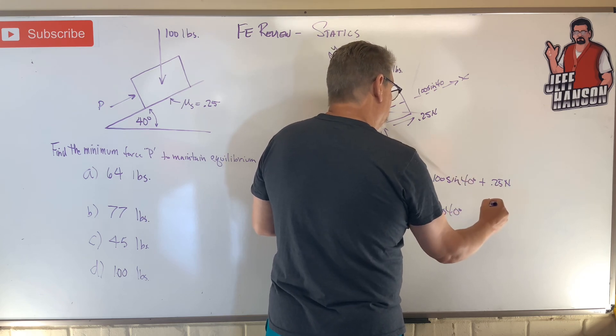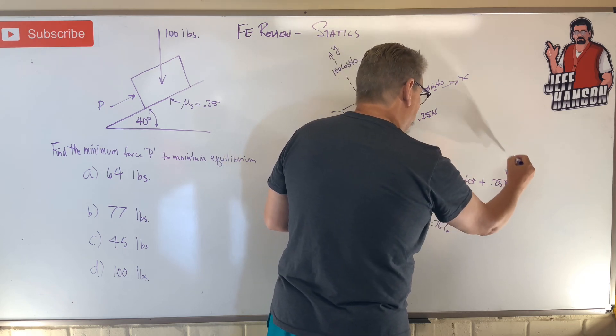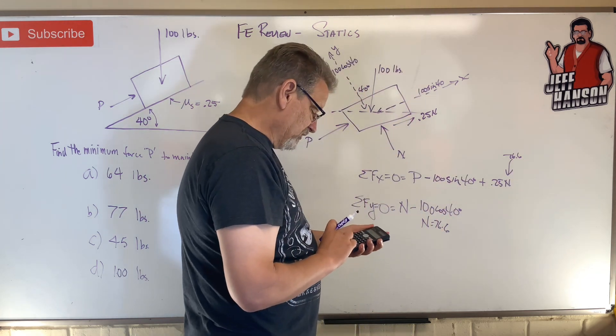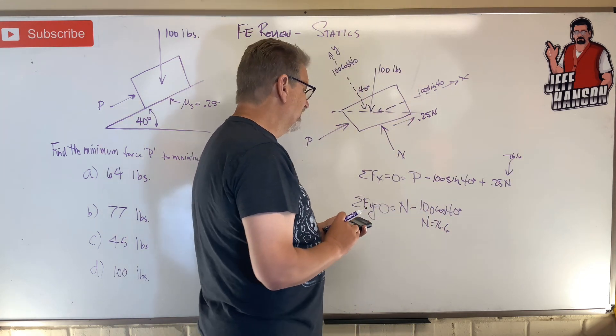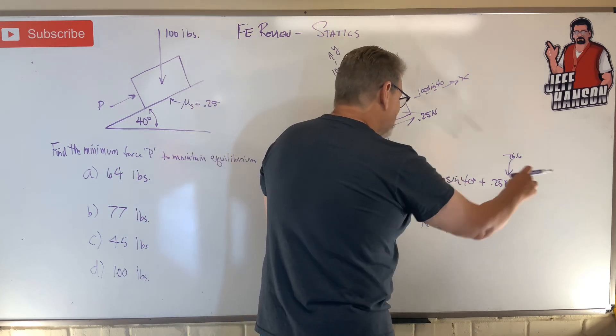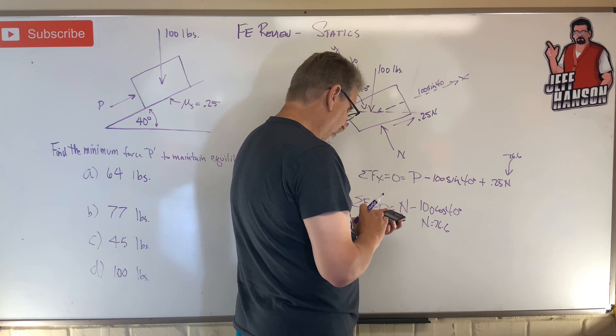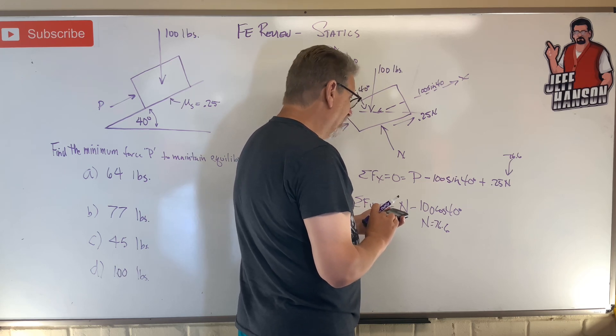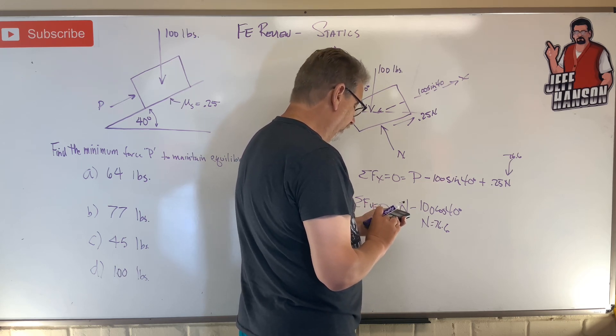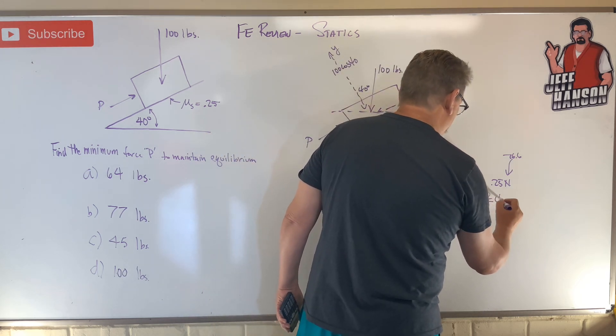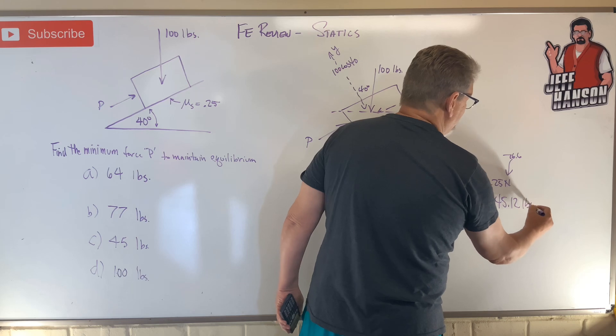76.6, that's a 6. So we're going to put that right there, 76.6, right? Times 0.25 equals, that's 19. Now take that, move it to the other side. So 100 sine of 40, minus, answer equals, 45.12. P equals 45.12 LBS.